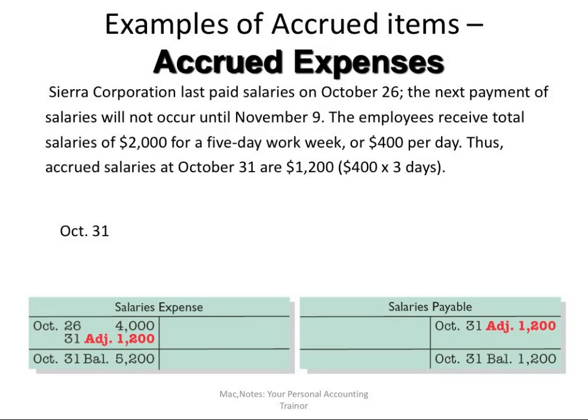These next ones are called accrued items. That is, something has happened but we have not yet recorded it. Accrued means it has been incurred but is not recorded in the records — it's one of those old 15th century Venetian terms. We have accrued expenses and accrued revenues.